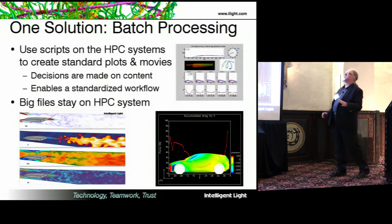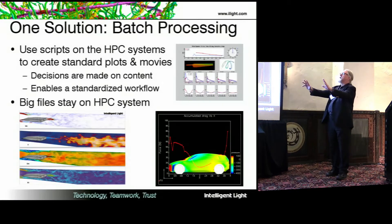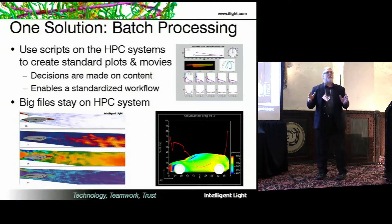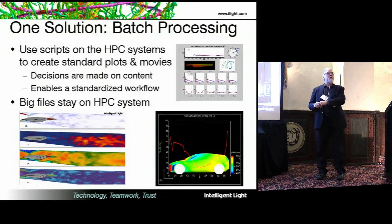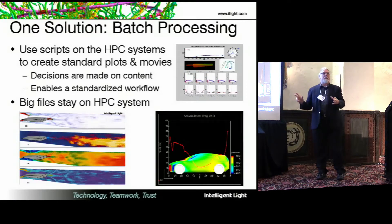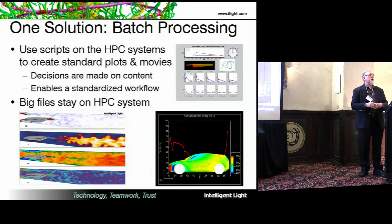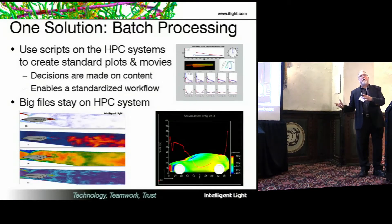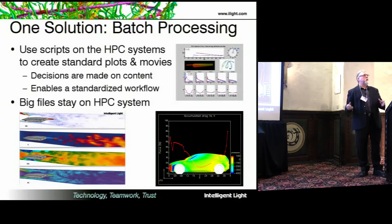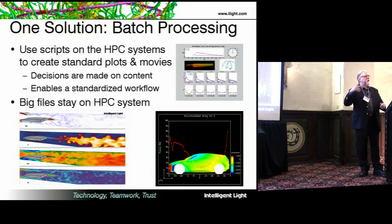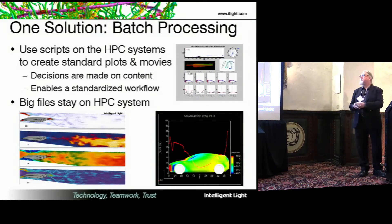Historically, one solution has been batch processing: you use some scripts on the HPC system, let software create movies or standardized plots, and come to a meeting with those. That way, you never have to move big files off the HPC system. The automobile industry works this way — standardized plots are required. However, if you don't know what you're looking for, you may not get it in a standardized plot. Or if the standardized plot causes your boss to ask 'why?' and you don't have the answer, you want to go back and look at the big volume file — and then you're stuck again.